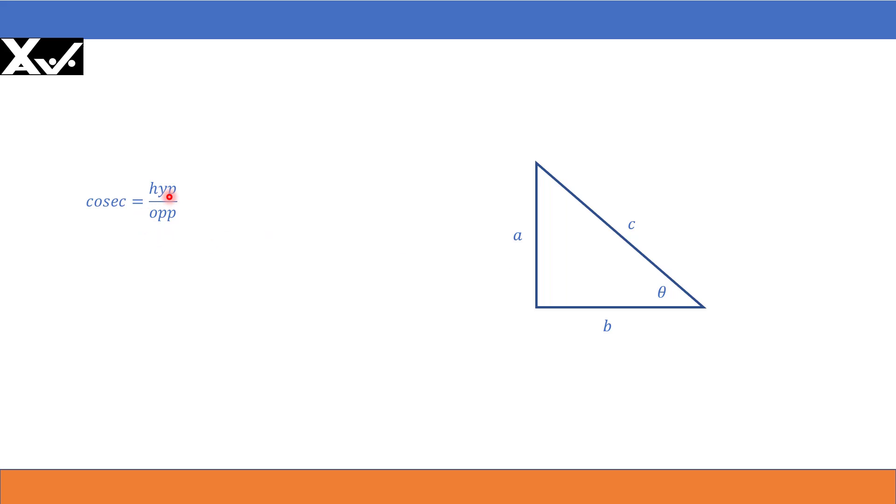Now, cosecant is defined as hypotenuse divided by opposite side, that is C divided by A. And cot is defined as adjacent side by opposite side, that is B divided by A.